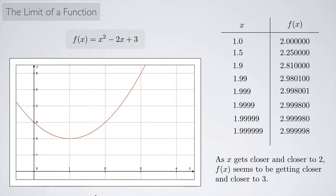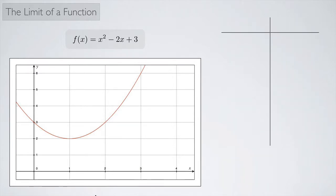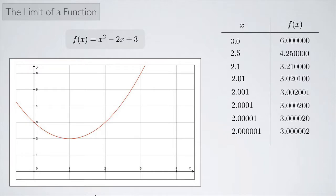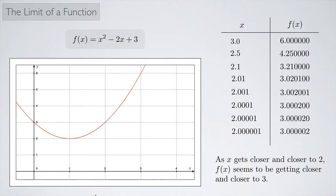Now what happens if we come from the other direction — getting closer and closer to 2 from the right? Again, I'll make a chart with x and f(x). Starting at x = 3, f(x) = 6. At x = 2.5, f(x) = 4.25. As we get closer and closer to 2 from the right, the value of the function gets closer and closer to 3. So as we take values on the x-axis approaching 2, on the y-axis we seem to be approaching 3.